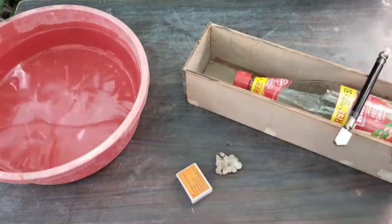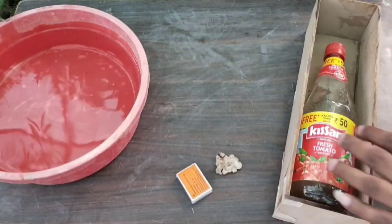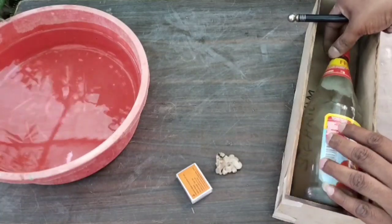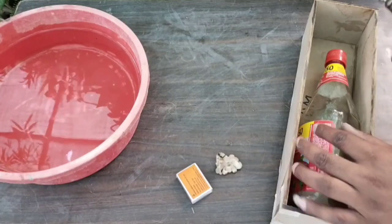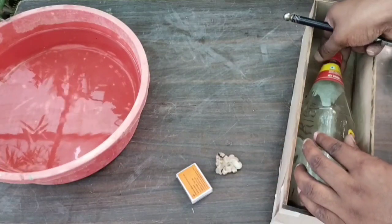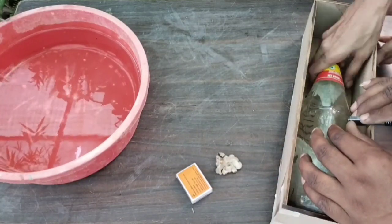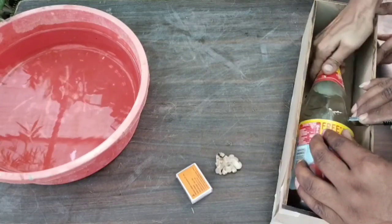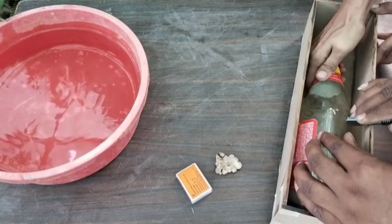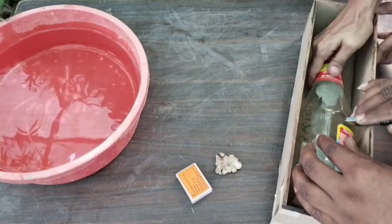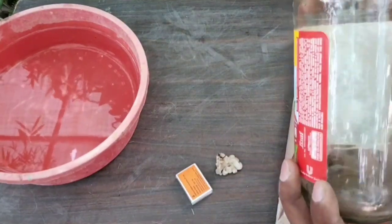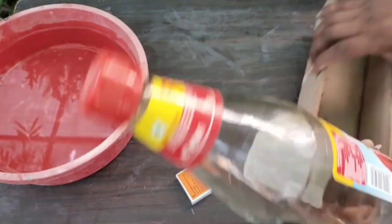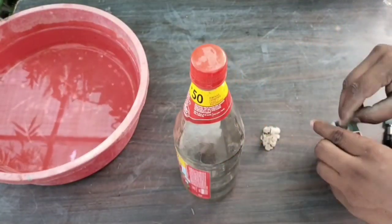First of all, we will mark the bottle by placing it in the box. We have used the box for the marking to be good, in which keeping the cutter in one place, the bottle will be rotated so that the marking will be perfect. Here you can see the marking.